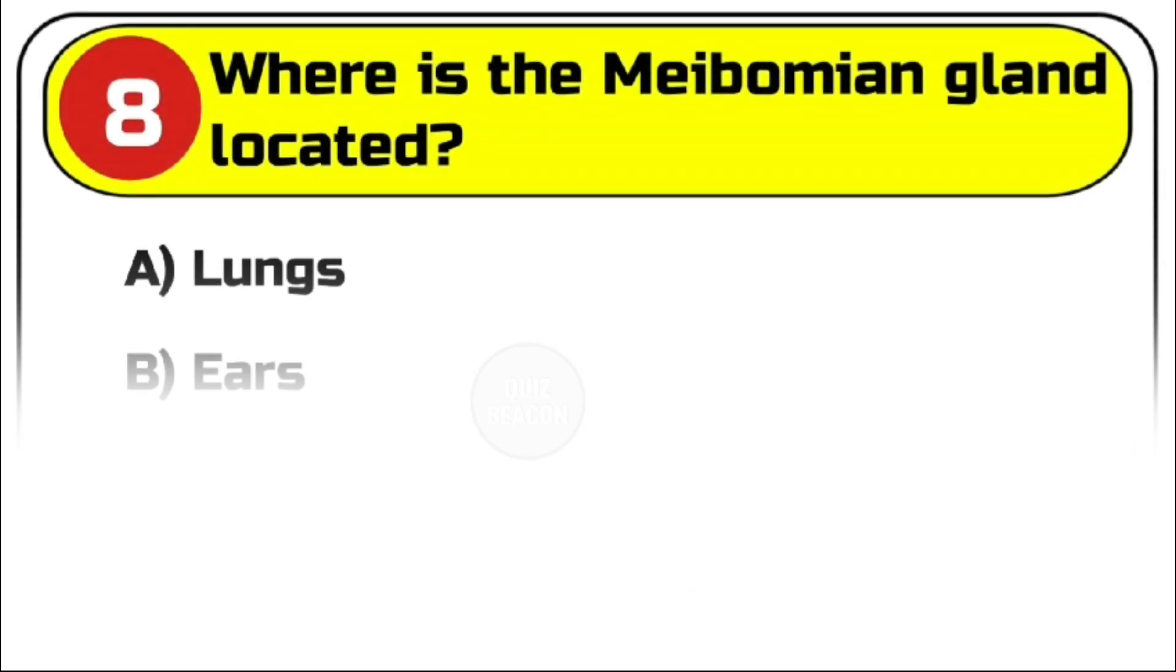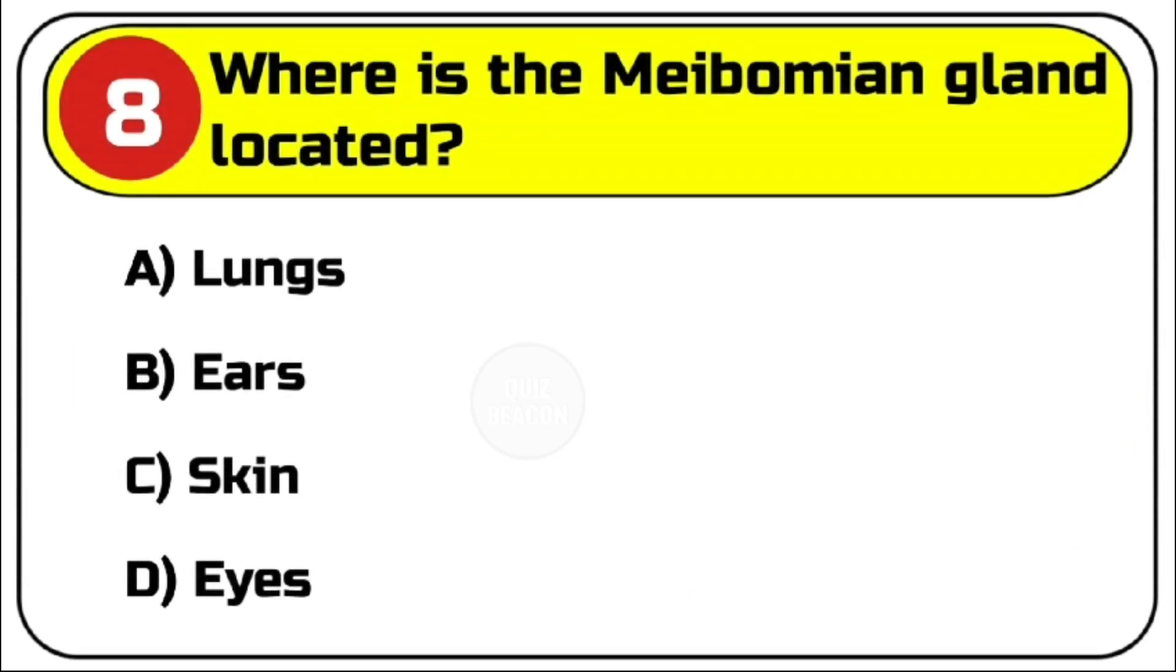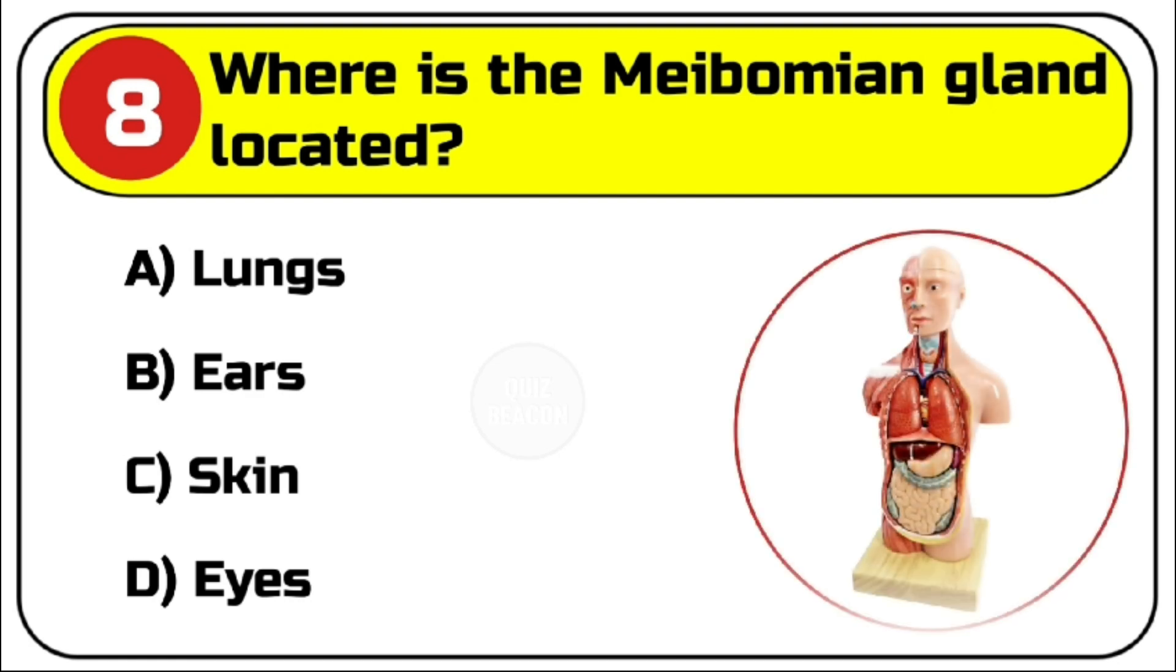Question number 8. Where is the meibomian gland located? Options are A. Lungs. B. Ears. C. Skin. D. Eyes.